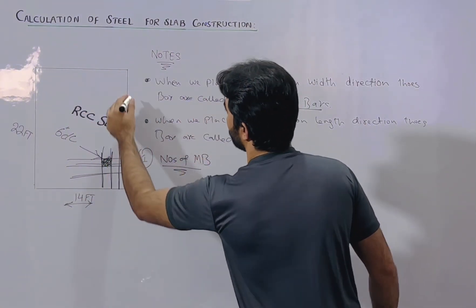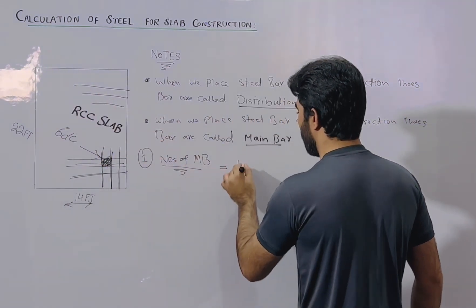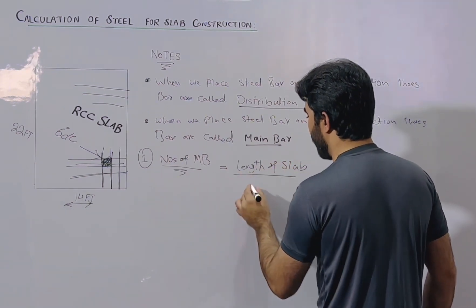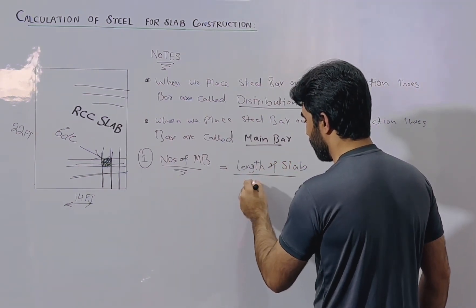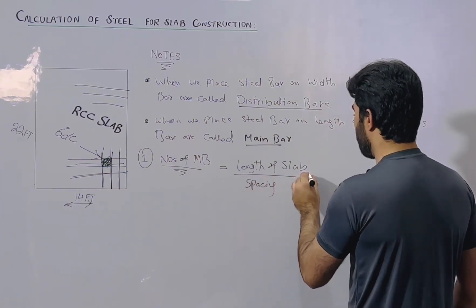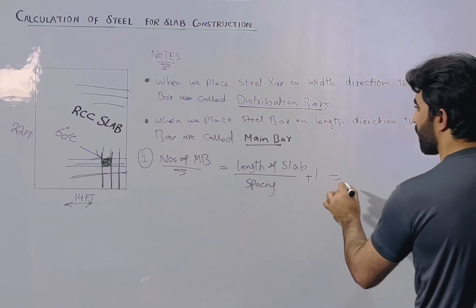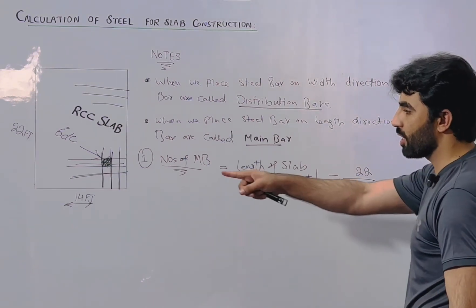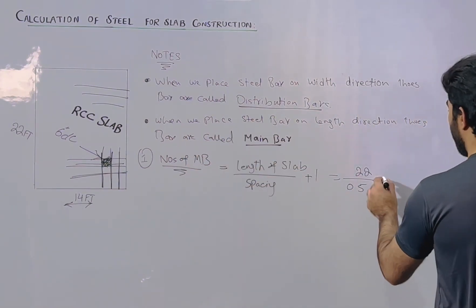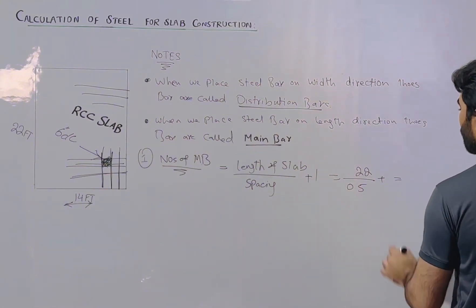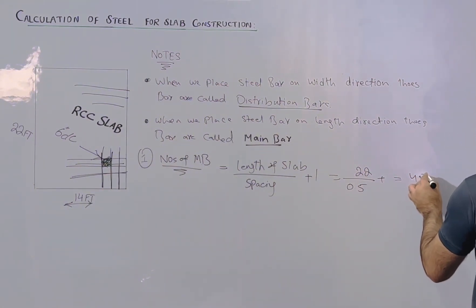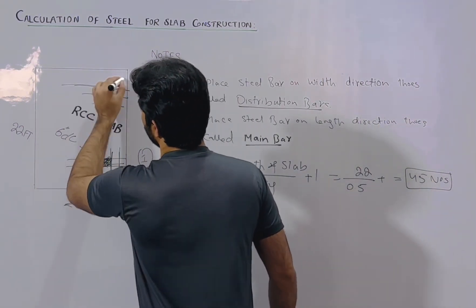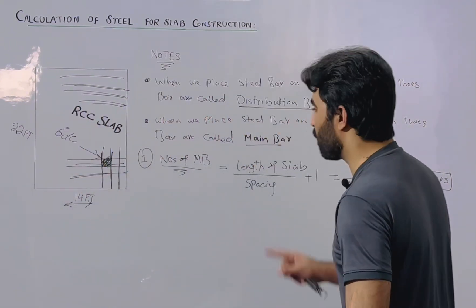To find the number of main bars, we use: length of the slab divided by spacing, plus 1. The length of the slab is 22 feet, divided by spacing of 0.5 feet, plus 1 — that gives us 44 plus 1. So we require 45 main bars for this slab.